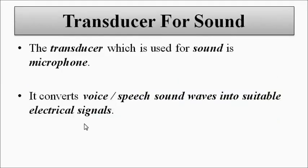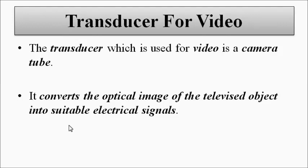The transducer used for the sound section is basically a microphone, which converts voice or speech signals — the sound waves — into suitable electrical signals. The transducer used for the video section is a camera tube, which converts the optical image into suitable electrical signals. The image is divided into various pixels by the process of scanning. The microphone and the camera tube are of various types depending on the type of television — monochrome or color.